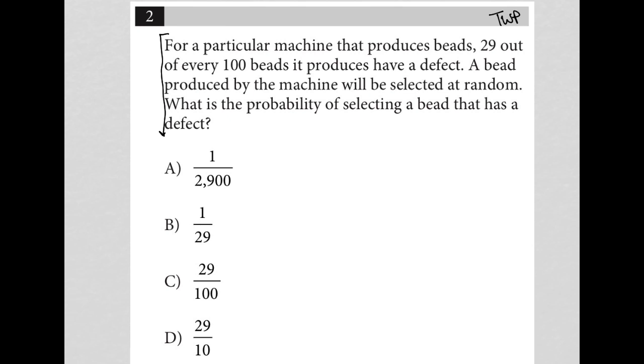So the first sentence says, for a particular machine that produces beads, 29 out of every 100 beads it produces have a defect. A sign of using TWP is to stop at the end of each sentence and actually write down any quantitative information that you have. So we know that we have 29 out of 100. So it's a fraction, 29 over 100 has a defect. So this is my defect rate, basically practically 29%.